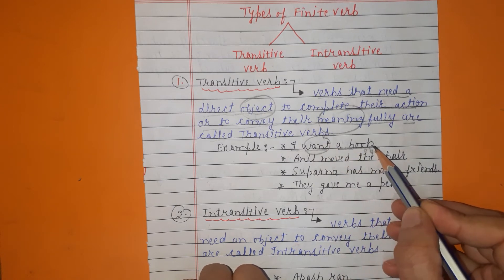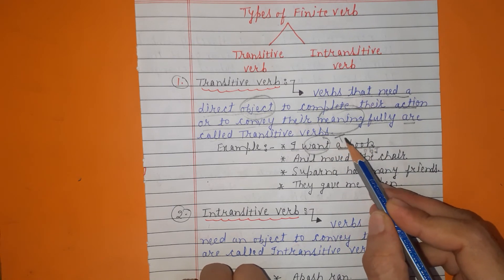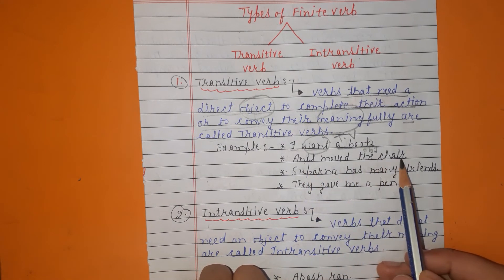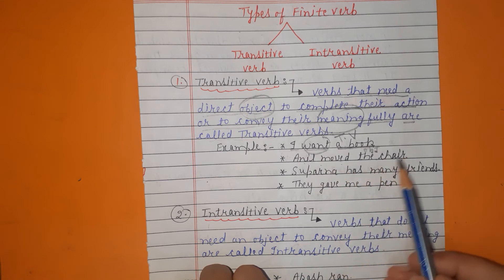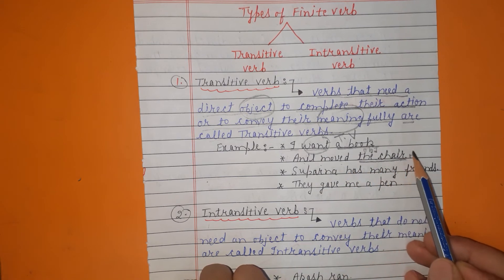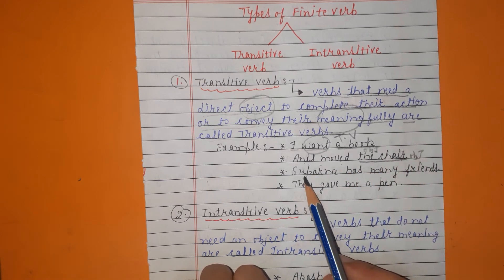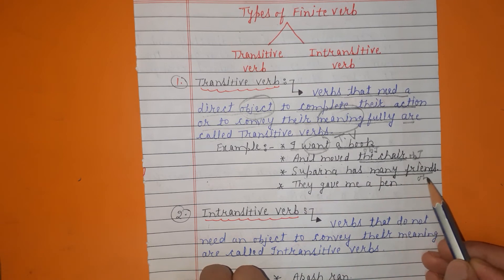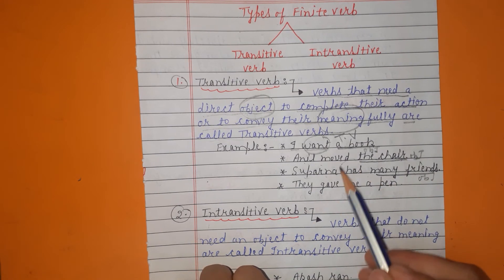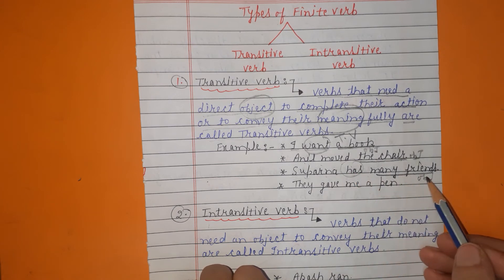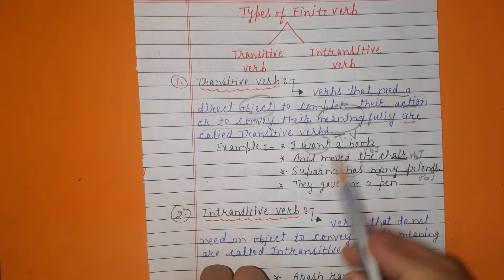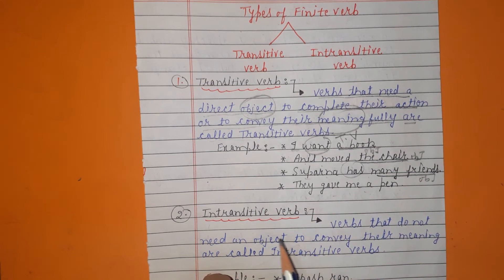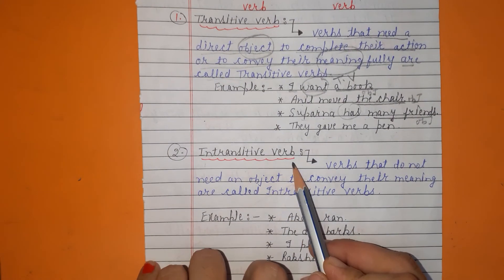Next example: 'Anil moved the chair' — here 'the chair' is the object. 'Parna has many friends' — here 'many friends' is the object. 'They gave me a pen.' So a verb which requires an object to make its meaning clear is called a transitive verb.